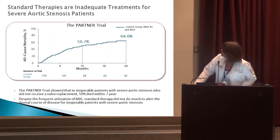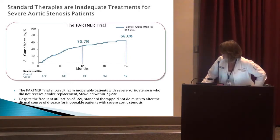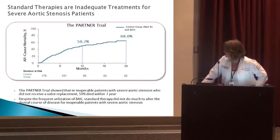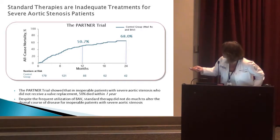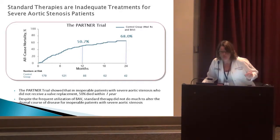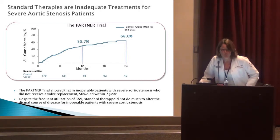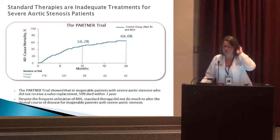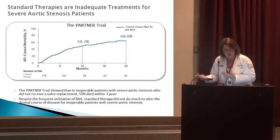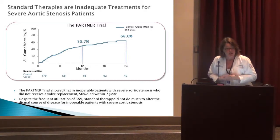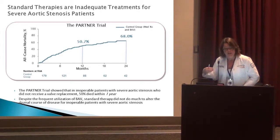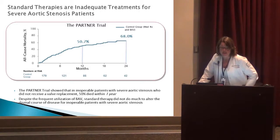The PARTNER trial was a huge trial. They noted that in inoperable patients with severe AS who did not receive valve replacement, 50% died within a year. This was done over 24 months. The control group received medical management or balloon aortic valvuloplasty. We do perform balloon aortic valvuloplasty here as a bridge or for patients with short-term life expectancy due to cancer or palliative care — really just to give them symptom relief. Over time, it doesn't last long-term; in two months the valve can revert to being severe.